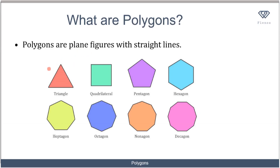When it has three sides, we refer to it as a triangle. If it has four sides, we call it a quadrilateral. If it has five sides, we call it a pentagon. Six sides: hexagon. Seven: heptagon. Eight sides: octagon. Nine sides: nonagon. And ten sides: decagon.